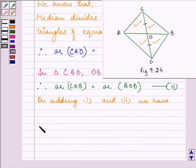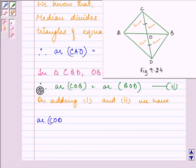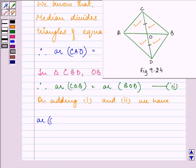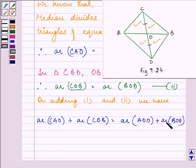I have over here area of CAO plus area of COB is equal to area of AOD plus area of BOD. That is further equal to area of ABC equals area of ABD. So, this was the thing that was needed to be proved.